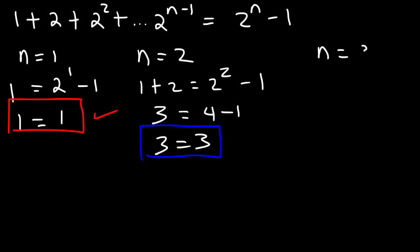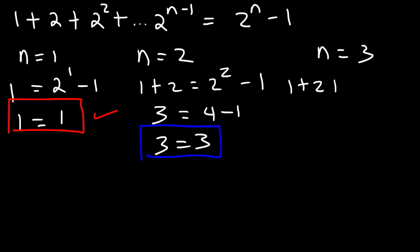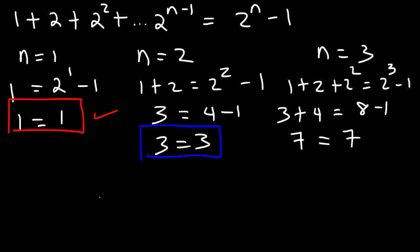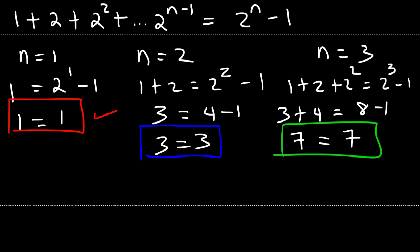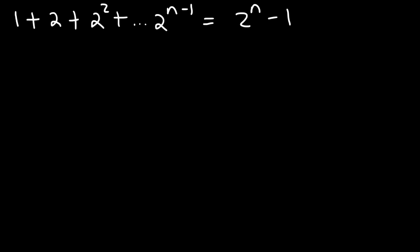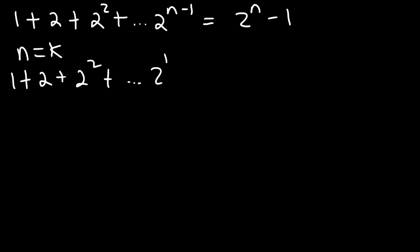Let's see if it's true when n is 3. On the left, let's add the first three terms: 1 plus 2 plus 2 squared, and that has to equal 2 to the third minus 1. 1 plus 2 is 3. 2 squared is 4. 2 to the third is 2 times 2 times 2, which is 8. 3 plus 4 is 7. 8 minus 1 is 7. So it's true when n is equal to 3. So we're going to assume that it's true when n is equal to k: 1 plus 2 plus 2 squared plus 2 to the k minus 1 is equal to 2 raised to the k minus 1.